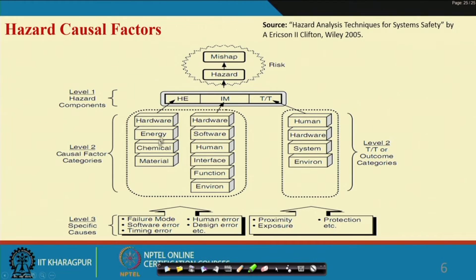Initiating mechanisms are also related to hardware, software, their interface, humanware, function, and environment. The target and threat are actually the property, people, and environment. Humans are the people, hardware systems are the property, and then there is the environment. Target and threat will be either people, property, or environment, or in combinations.